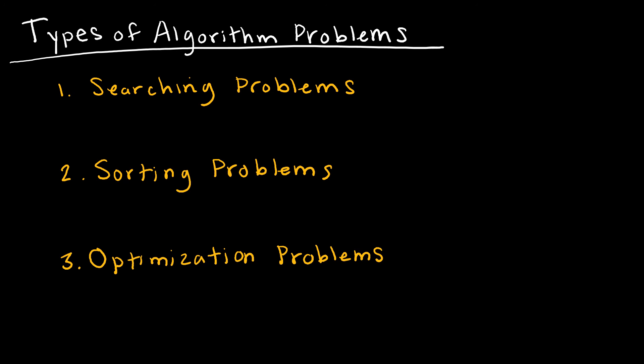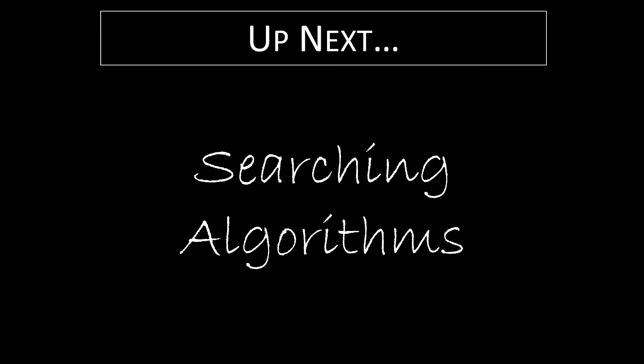But there's three basic types of algorithm problems we're going to look at. There's searching problems, where essentially what we're doing is we're looking through a list to find something that meets a specific characteristic. There's sorting problems. In sorting problems, I'm trying to sort things from least to greatest, or greatest to least, or biggest to smallest, that idea. And then, of course, there's optimization problems where I'm looking for the least or the greatest. So I'm trying to optimize by maximizing profit or minimizing cost. Up next, we're going to look at searching algorithms.